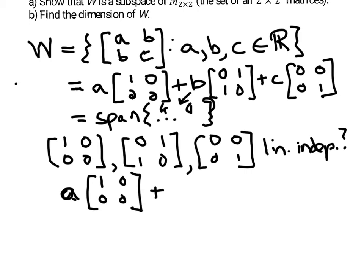times the first vector, plus some scalar, let's say B, times the second matrix, plus some other scalar, let's say C, times the third matrix.